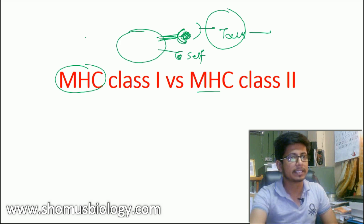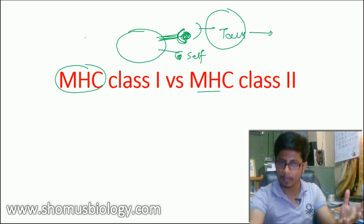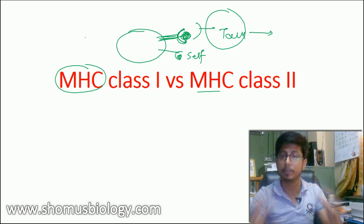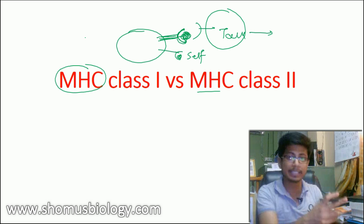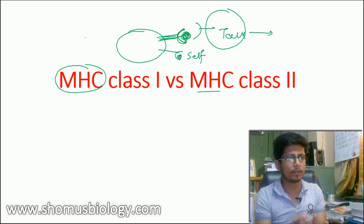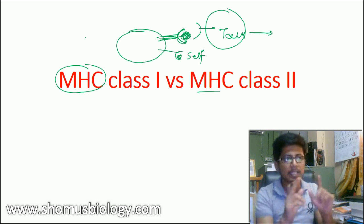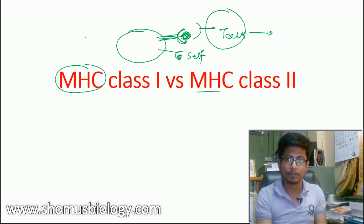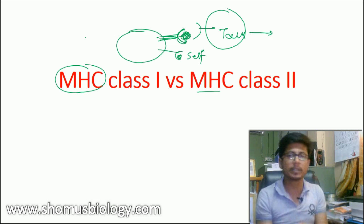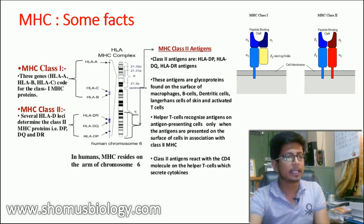Once MHC presents a pathogen or portion of a pathogen — that is, an antigen — to the rest of the immune system cells, T cells can recognize it. T cells can then activate more T cells, activate B cells, and a whole immune response begins, secreting antibodies against that pathogen. That is why these surface proteins are necessary for the compatibility of tissue transplantation, hence the name major histocompatibility complex.